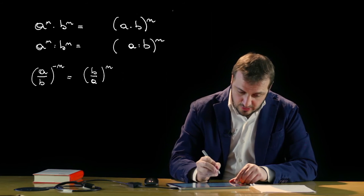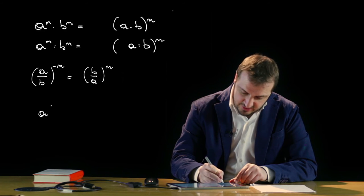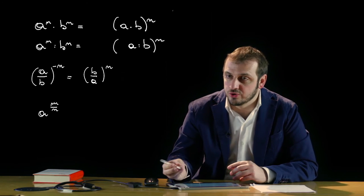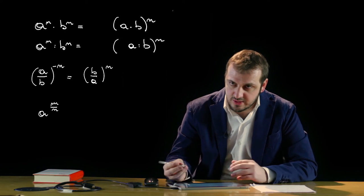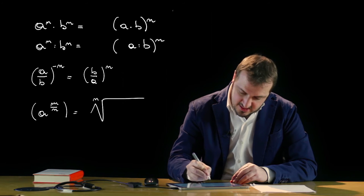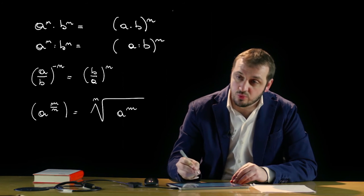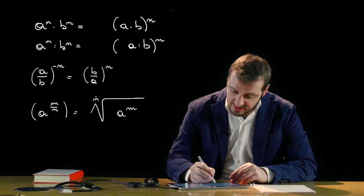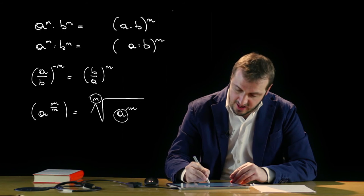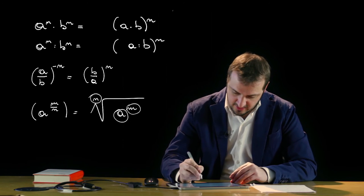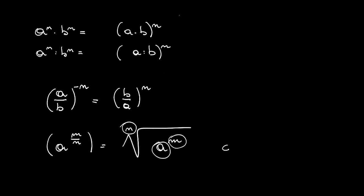Se invece abbiamo a che fare con una potenza con un esponente razionale, quindi a elevato per esempio ad m fratto n — ricordo che il numero razionale è un rapporto fra due numeri interi, quindi m e n — questa potenza è uguale alla radice ennesima di a alla m. Qui ancora un richiamo ai radicali che vedremo nella prossima lezione, in cui n si chiama indice del radicale, a è il radicando ed m è l'esponente del radicando. Questa è definita per a maggiore o uguale di zero.